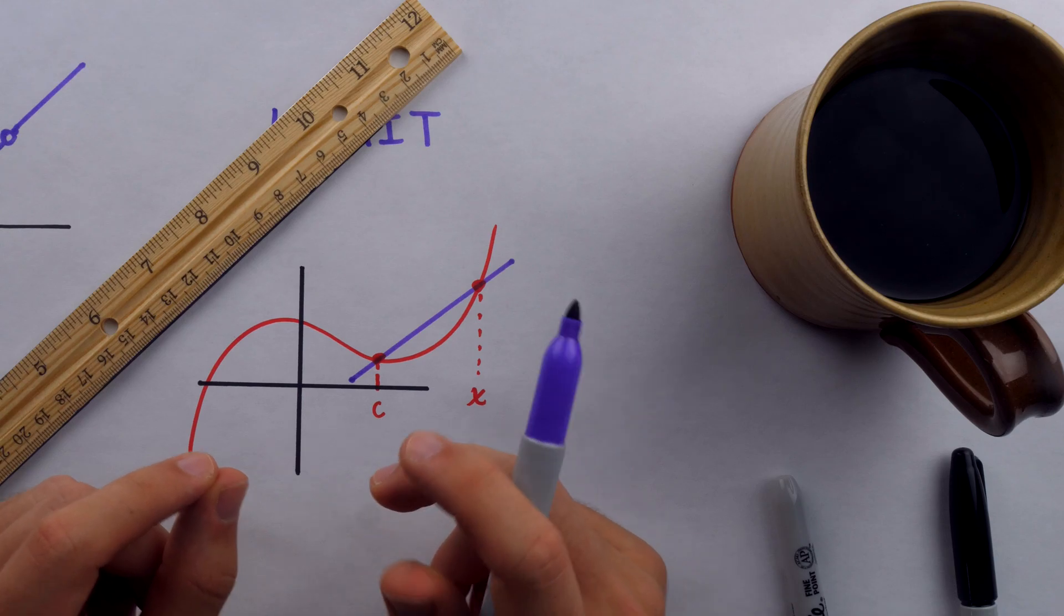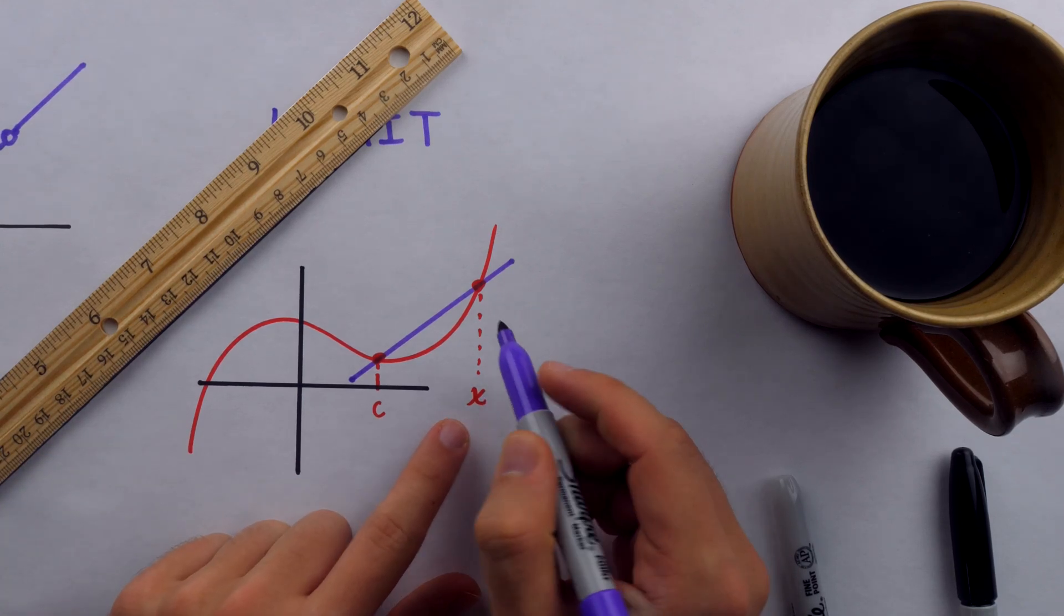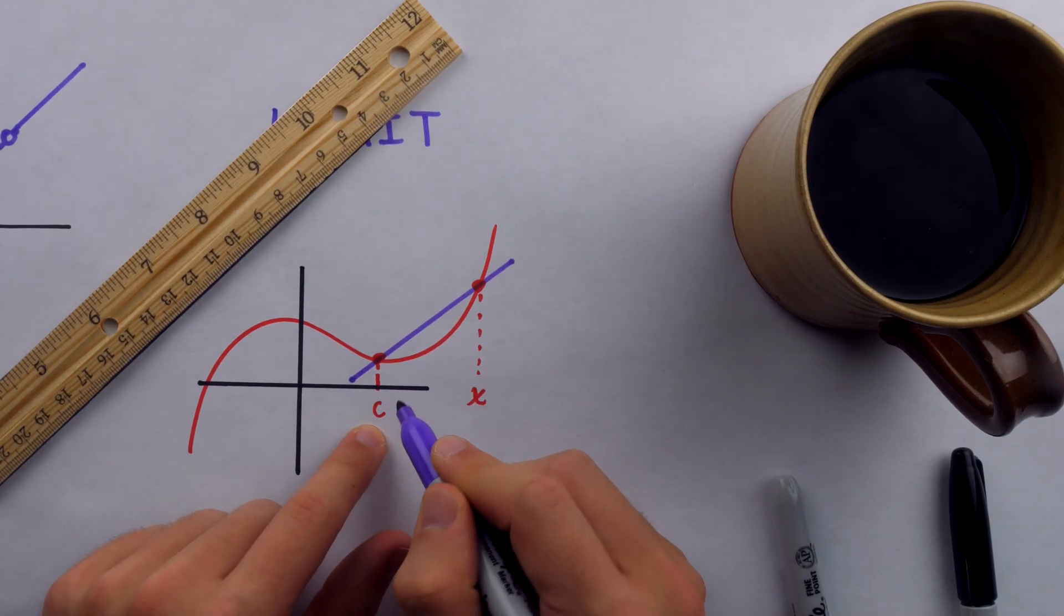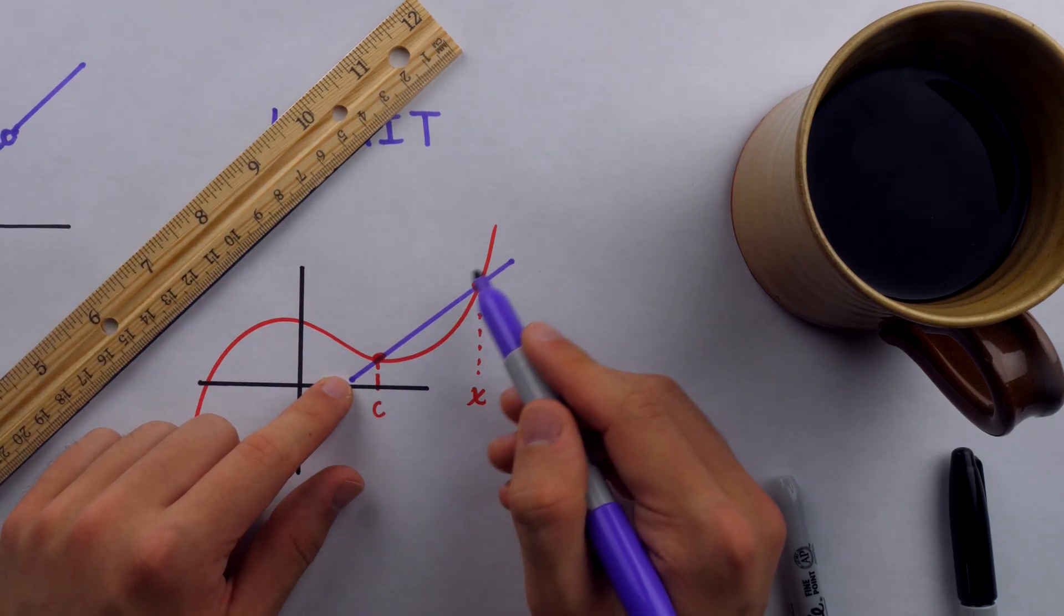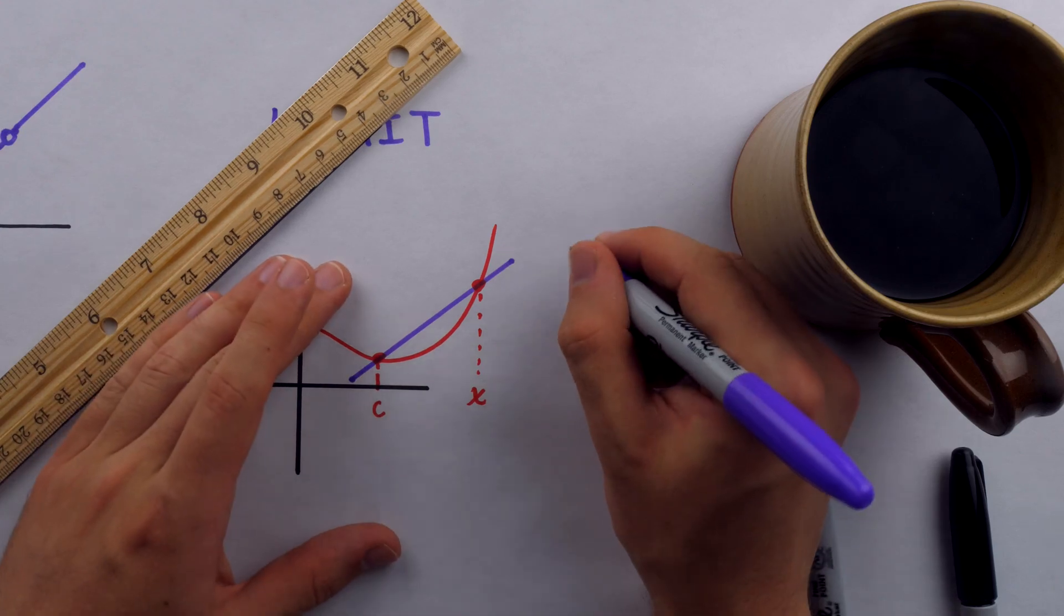And the slope of that line is the average rate of change of the function from here to here. Now I could choose x to be anywhere I like and I could find the slope of this line passing through c and x. And that would tell me the average rate of change of this function over that interval. With one exception, I can't put x directly on c.